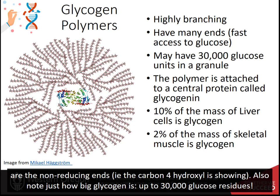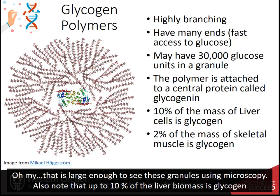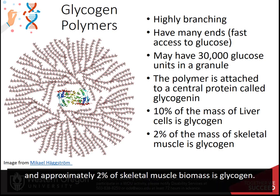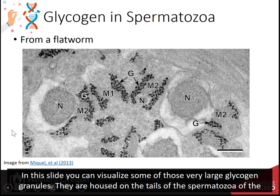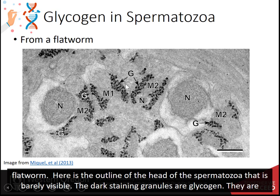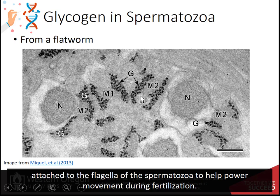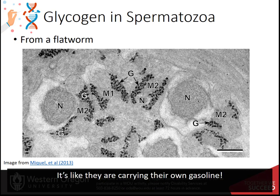Note just how large glycogen is — up to 30,000 glucose residues — large enough to visualize these granules using microscopy. Up to 10% of liver biomass is glycogen and approximately 2% of skeletal muscle biomass is glycogen. These very large glycogen granules can be seen housed on the tails of spermatozoa of the flatworm, attached to the flagella to help power movement during fertilization — like carrying their own gasoline.